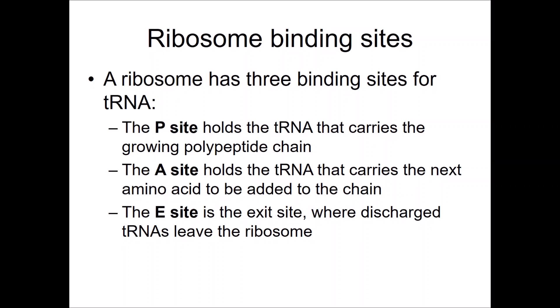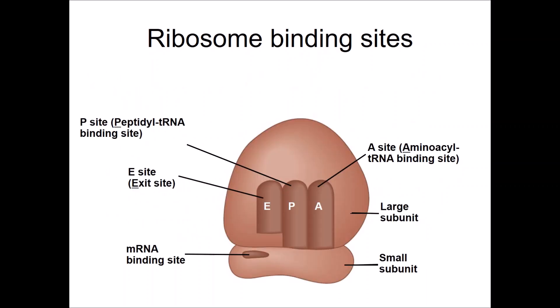A ribosome has three binding sites for tRNA. The P site holds the tRNA that carries the growing polypeptide chain; it is in the center of the large subunit of the ribosome. The A site holds the tRNA that carries the next amino acid to be added to the chain, and the E site is the exit site where discharged tRNAs leave the ribosome. The E site is where the naked tRNA exits, the P site holds a tRNA linked to a polypeptide chain, and the A site holds a charged aminoacyl tRNA.